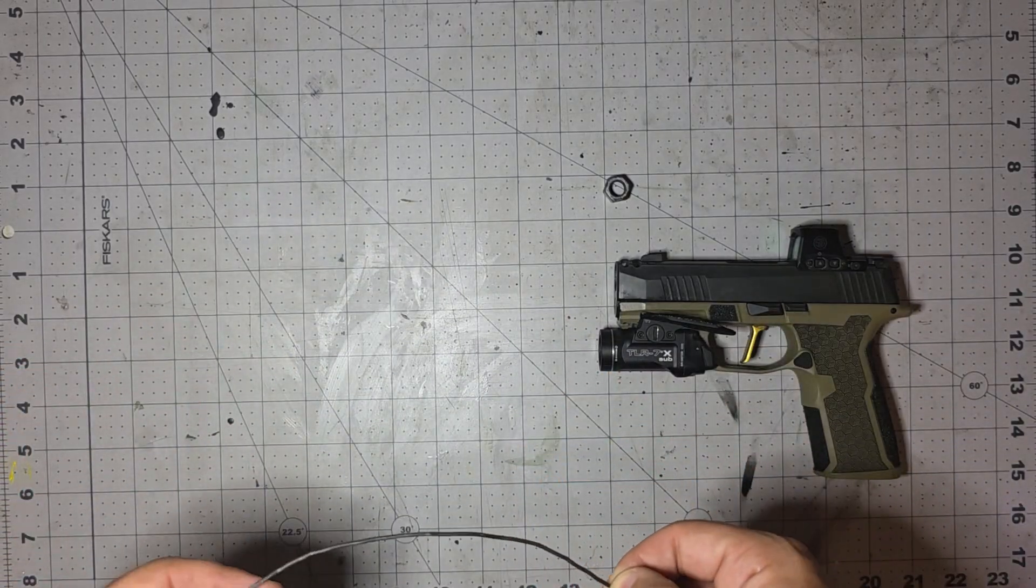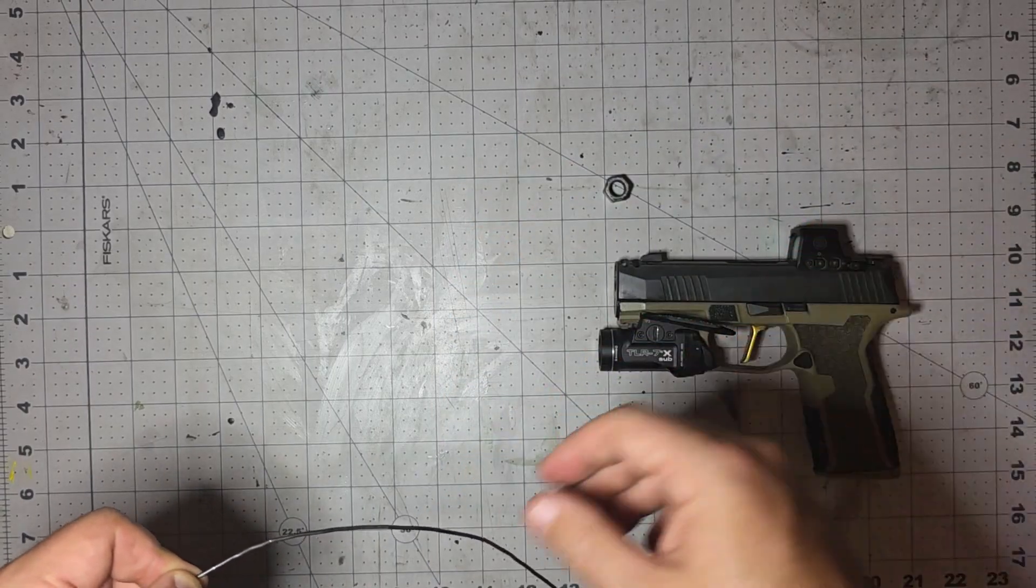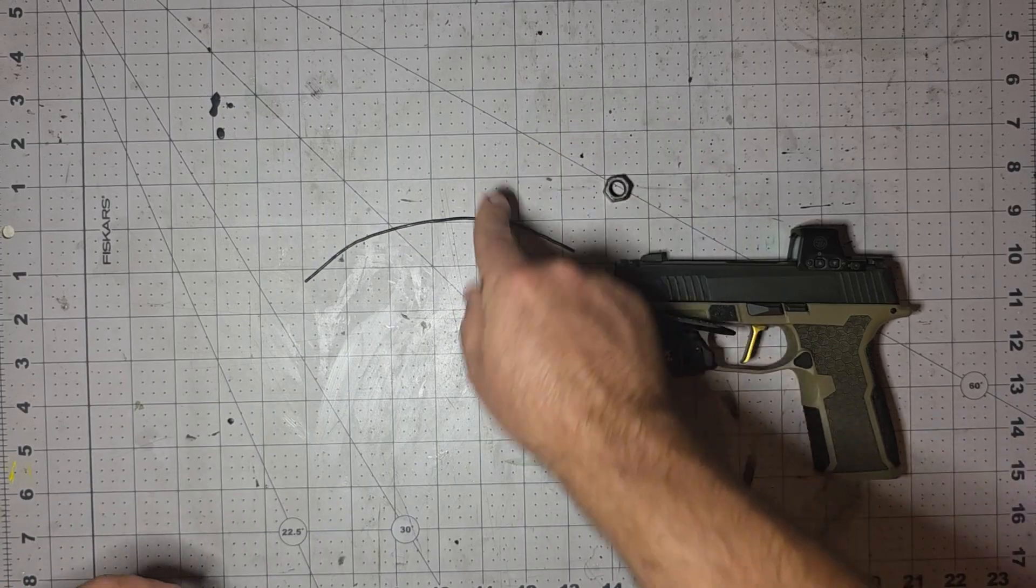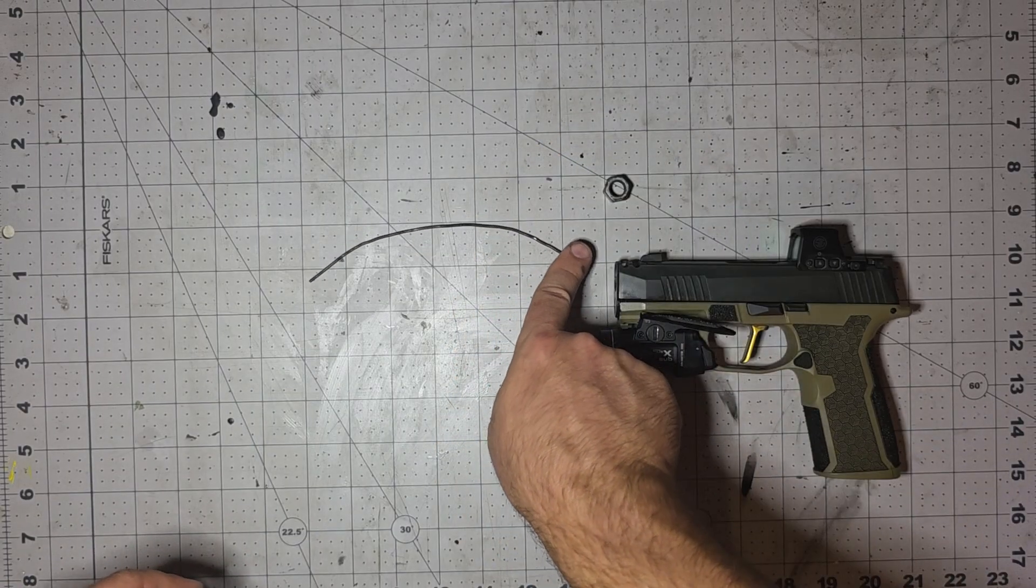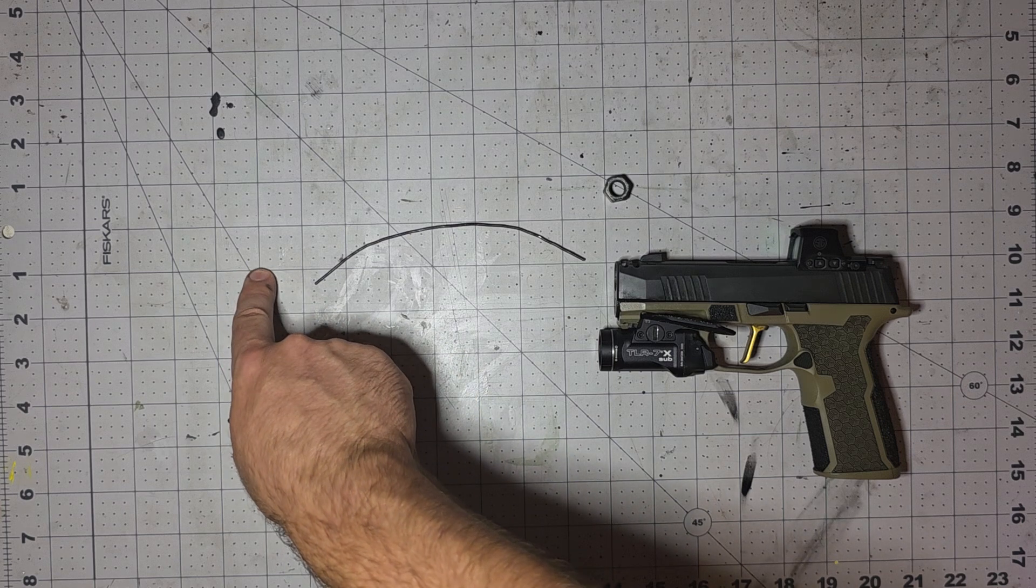Handguns aren't really designed to go out to a large distance. 50 yards is pretty good for a handgun. But even at a 50 yard zero, so 12 and 50, if I shoot out to, say, 75 yards, I can still hit out here.